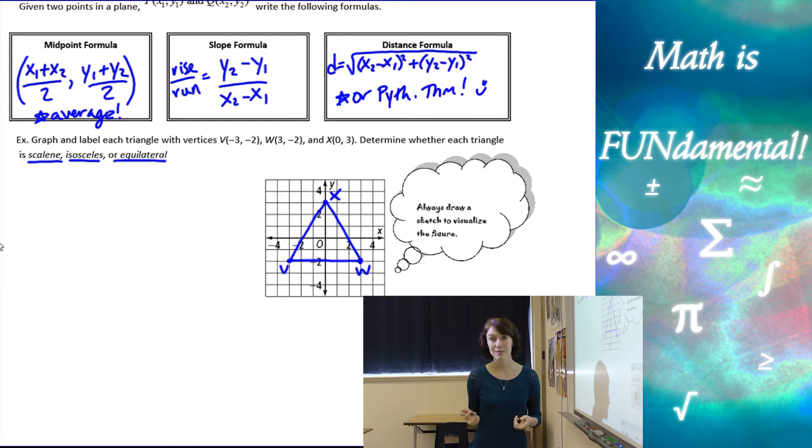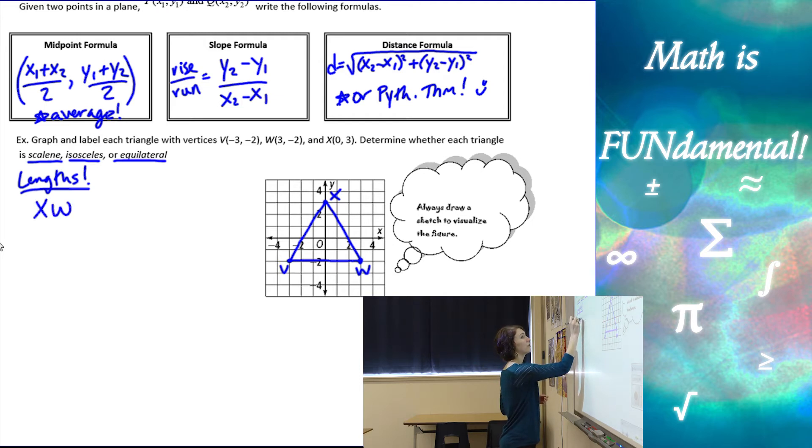So remember, scalene means all the sides are different lengths. Isosceles is when only two sides have the same length. And equilateral is when all three sides have the same length. So we need to find the lengths of all the sides. So let's find our lengths and label your work. Always label and organize your work. So we need to find xw, we need to find vw, and we need to find xv.